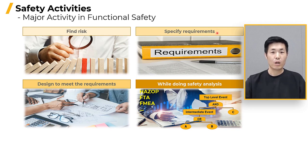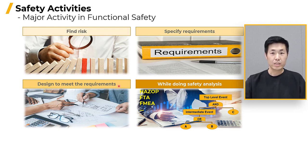The next step involves establishing safety requirements. Based on our understanding of the risk identified in the previous step, we determine the high and low risk involved. If the risk level exceeds our target, we define safety requirements to mitigate and reduce the risk. Following this, we proceed to design an architecture that incorporates these safety requirements. All safety requirements must be adequately addressed in the architecture design without any omission.